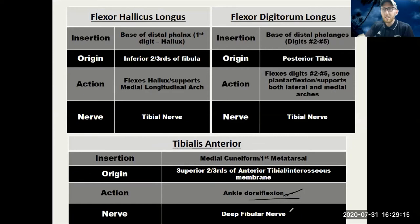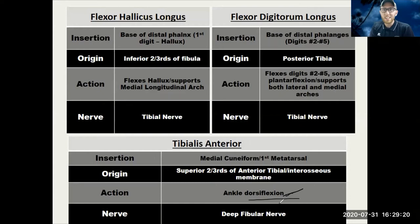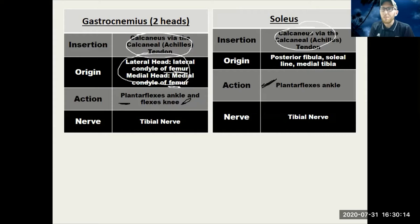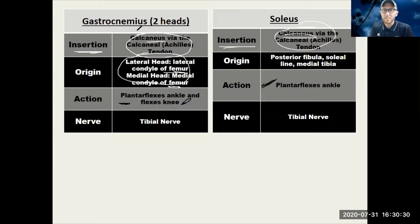Dorsiflexion is toes to the ceiling or toes toward your shin. The opposite of dorsiflexion is plantar flexion. For the soleus and the gastrocnemius, in the superficial posterior compartment, these plantar flex the ankle. Notice that the gastrocnemius also flexes the knee because it originates above the knee on the femur and crosses the knee joint. You want to know the common insertion point of the calcaneus via the calcaneal tendon — also known as the Achilles tendon. Know the insertion for both the soleus and the gastrocnemius.